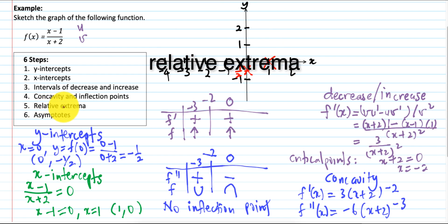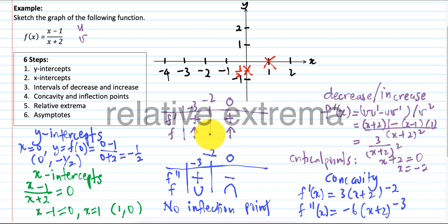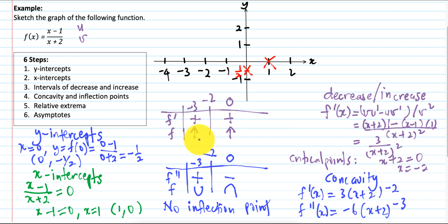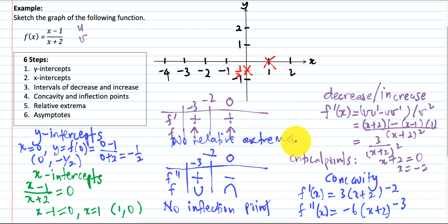Step 5: Relative extrema. According to the first derivative test, if there is a change in sign of F', then we have a maximum or minimum. But in this case, F' is positive on both sides of x = minus 2, so there are no relative extrema.